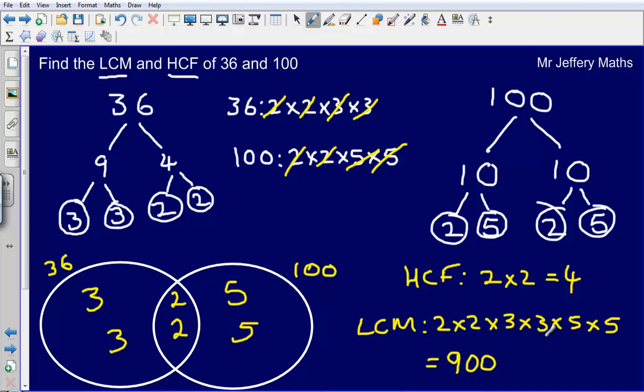So quick recap of what we've done. First step is to write each of the numbers as a product of prime factors. Then after we've done that, put the numbers as products of prime factors into a Venn diagram here. Then the highest common factor is the numbers that are in this middle part here, the numbers that are shared between the two, multiplied together. So the highest common factor is that part in the middle, which is 2 times 2. And then the lowest common multiple is everything that is in the Venn diagram multiplied together.